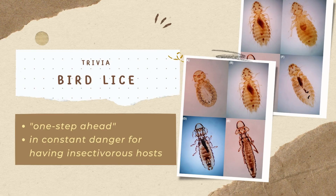Order Malophaga is also called bird lice because they are commonly found on birds. They are active and less sluggish compared to their other relatives, owing to their long legs, which keep them one step ahead. However, they are in constant danger of being eaten by their hosts, which are insectivorous like birds. They can develop enormous populations and cause considerable irritation to their hosts when present in large numbers, especially to animals that have difficulty grooming themselves, like the elephant.